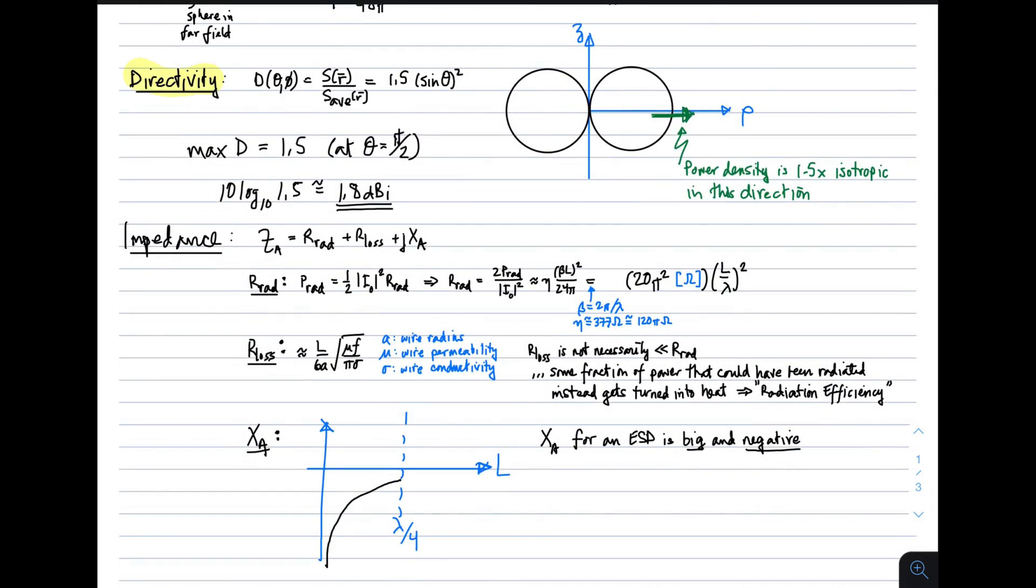So, let's get to it. Directivity is defined as power density divided by average power density. We just do that calculation and we get 1.5 times sine theta squared. If we make a picture of this, here's the z-axis. That's also the axis of the dipole. So, the sine theta is this thing.